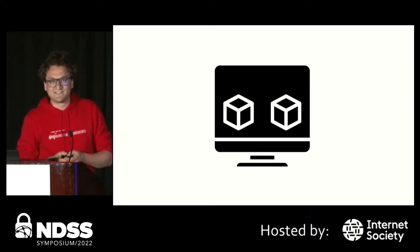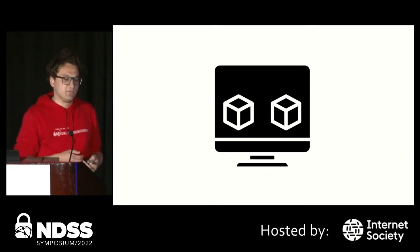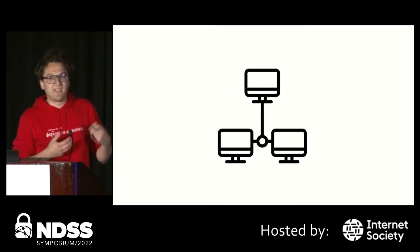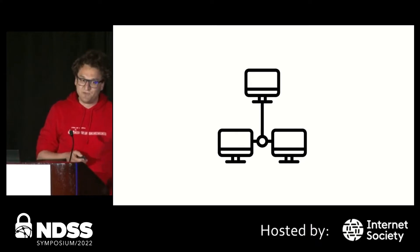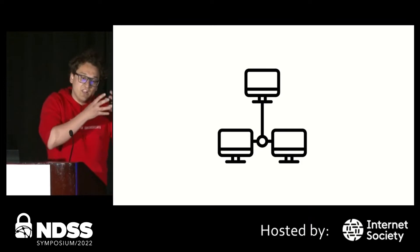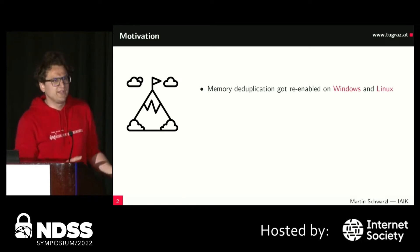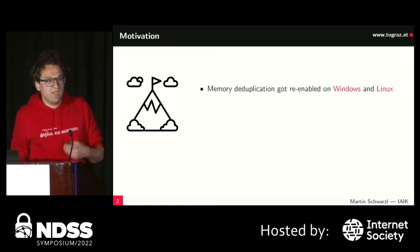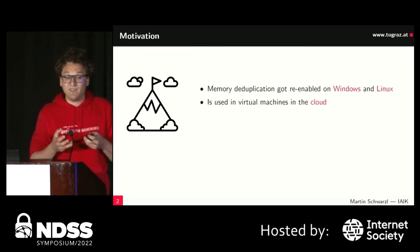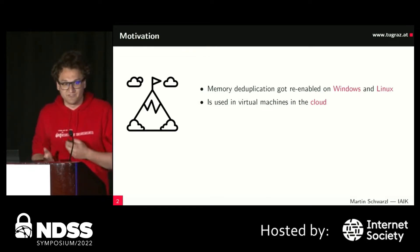Where were attackers in previous side-channel attacks? An attacker might be on a co-located machine or mounting malicious JavaScript on a website. But for memory deduplication, which had not been shown at the time, the question was: is there a way to attack something in a local network or internet scenario? Memory deduplication was re-enabled on both Windows and Linux and is enabled by default on certain Ubuntu servers. It is widely used in the cloud — we contacted cloud providers and they confirmed this.